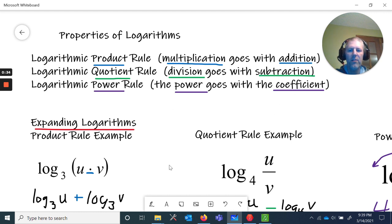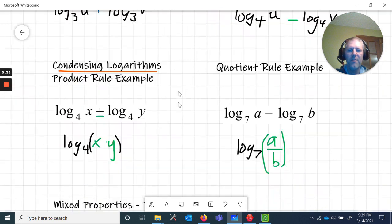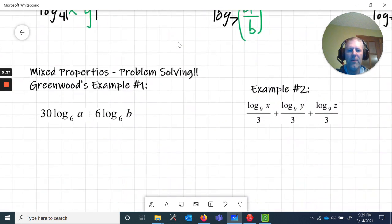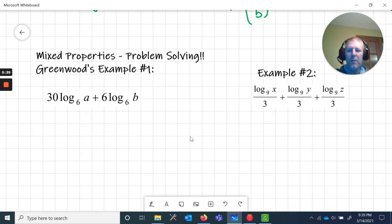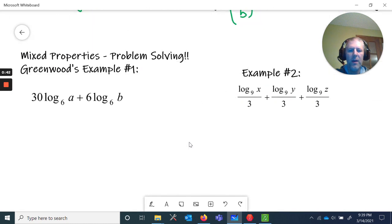We did some examples in the last video, go check that out if you need some guidance. These two examples are both condensing. What I'm noticing is both of these problems are going to combine power and product. I notice that because I've got a coefficient here and a coefficient here, and we have a plus here which is going to condense to a product.